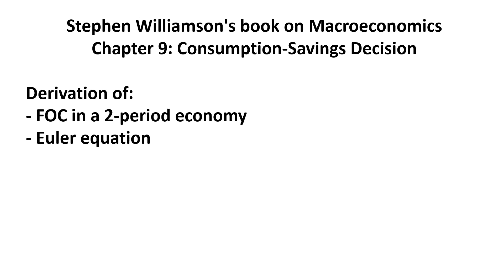We're going to do a quick lesson on chapter 9 of Williamson's Macroeconomics. In this short video, I will be deriving the first order condition for the consumption savings problem in a two period economy, and I will also be deriving the Euler equation.